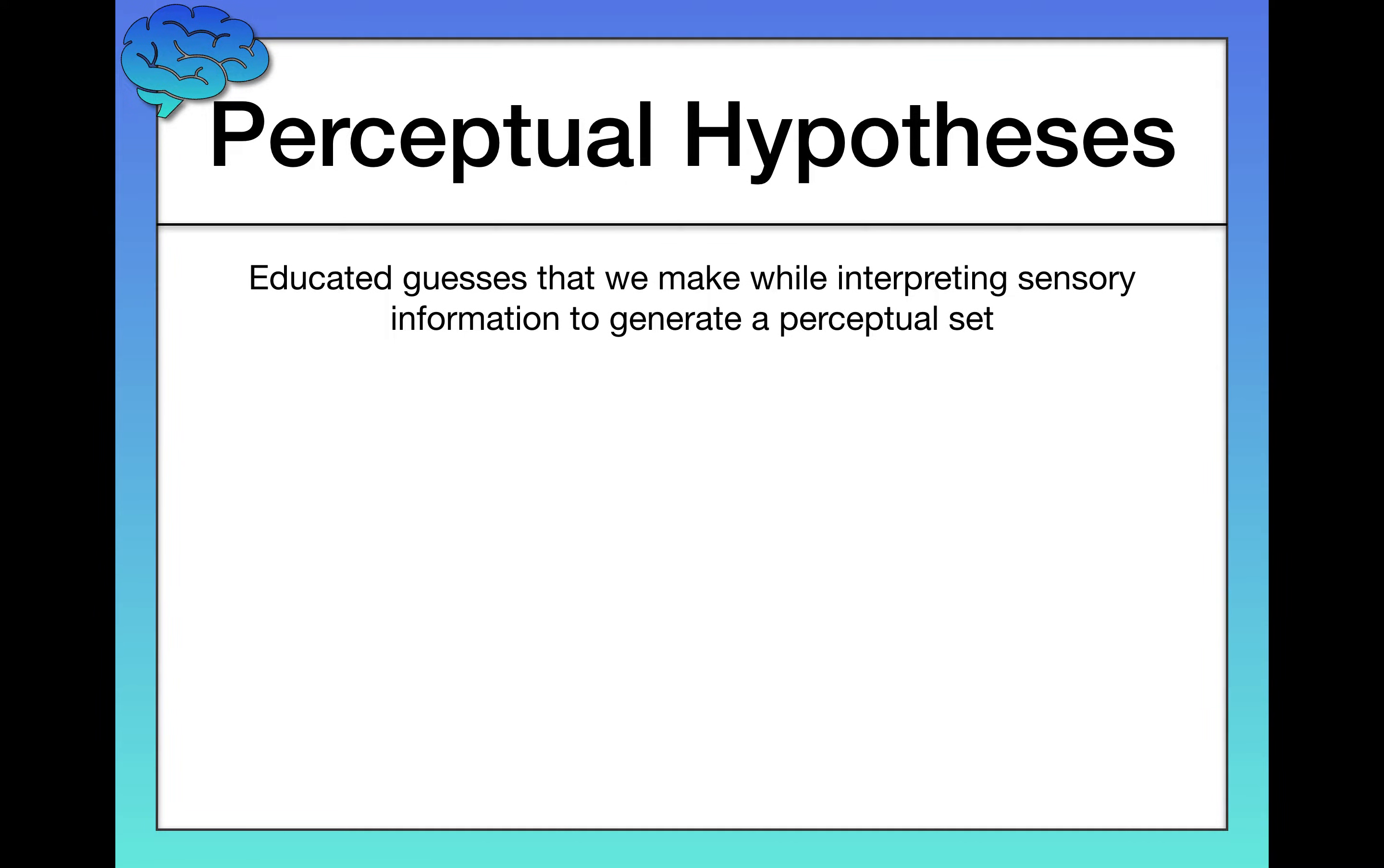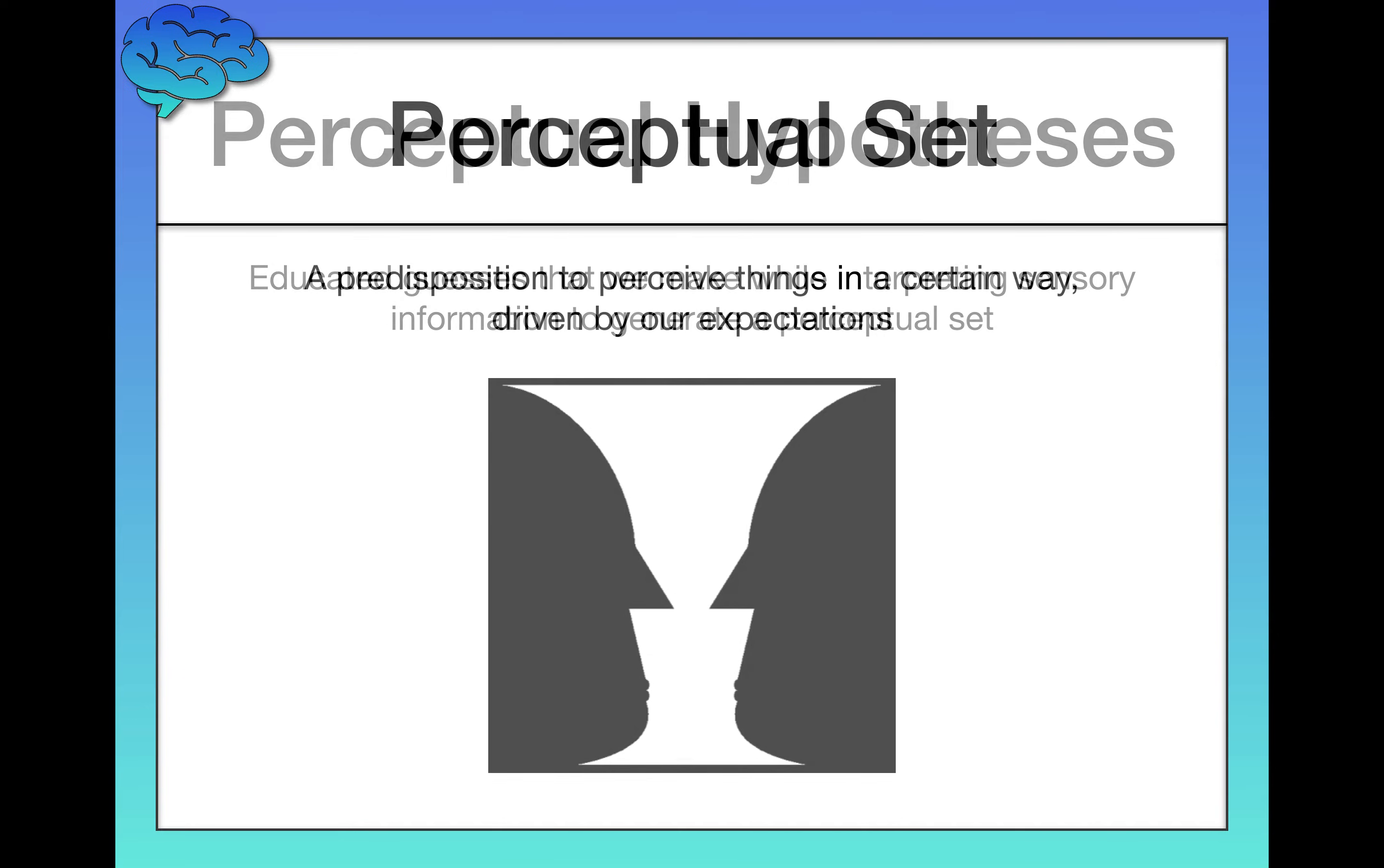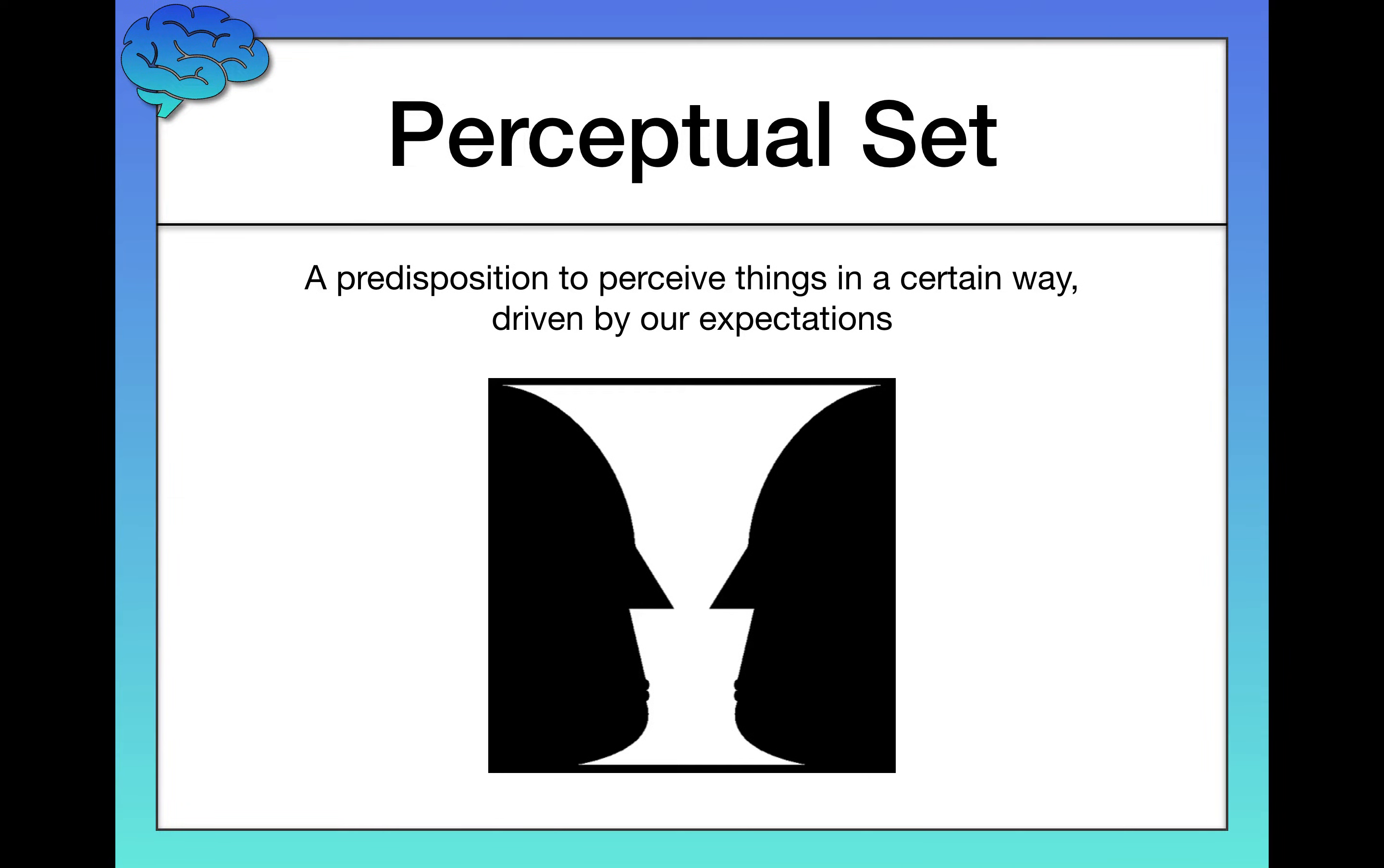And by making these educated guesses, these hypotheses, what we generate is a perceptual set. Perceptual set is a predisposition to perceive things in a certain way, which are, again, driven by our expectations or our hypotheses about what we're perceiving.